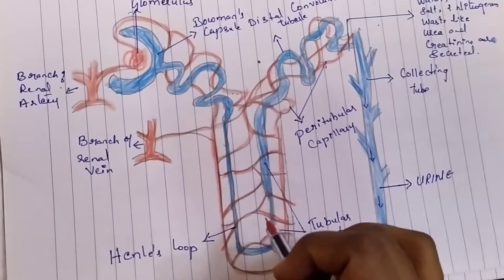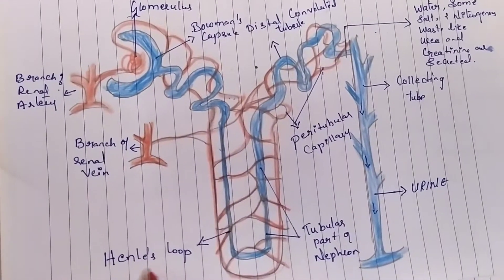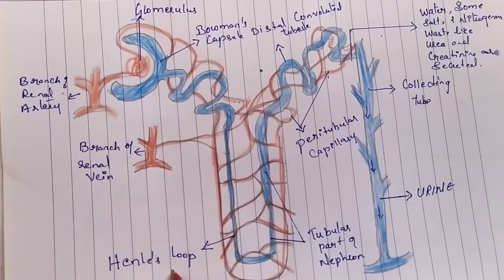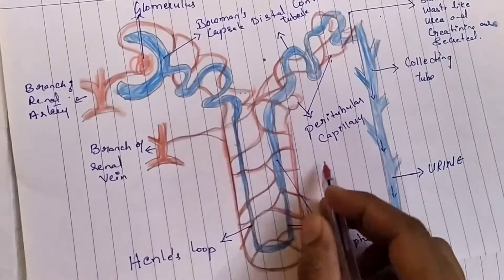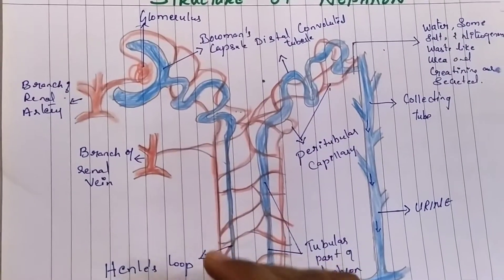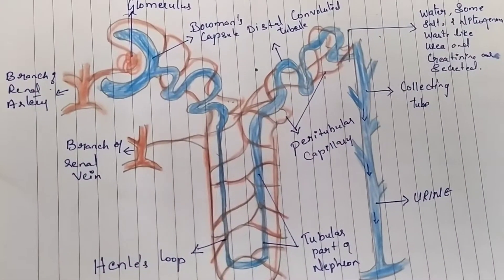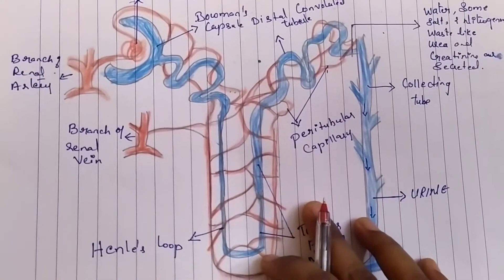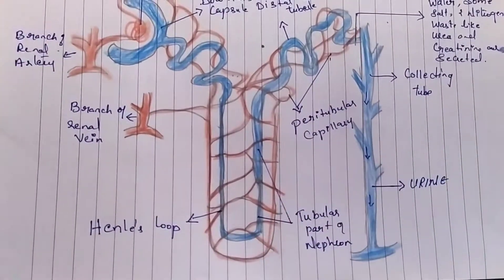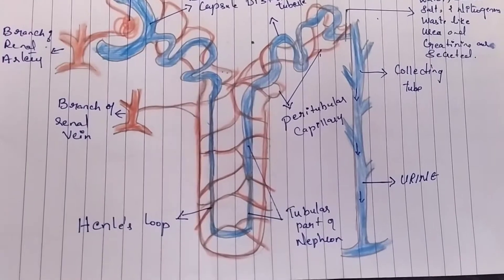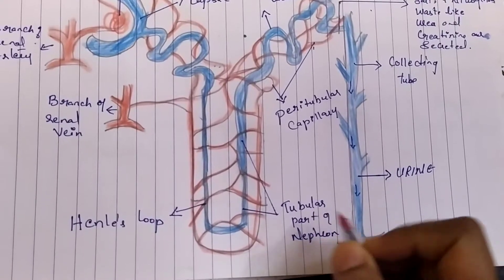This network of capillaries around the convoluted tubules — along with Henle's loop of the uriniferous tubules — helps in the reabsorption of important substances required by the body. In this selective reabsorption, in the proximal convoluted tubule, approximately all the glucose, amino acids, and some inorganic salts are reabsorbed from the nephric filtrate back into the blood through the peritubular capillaries.